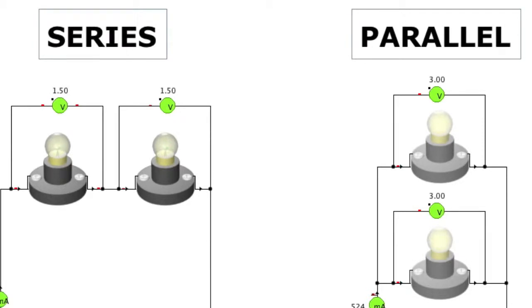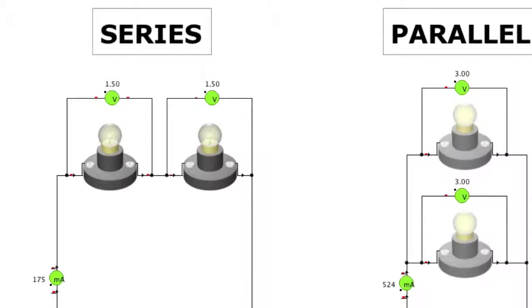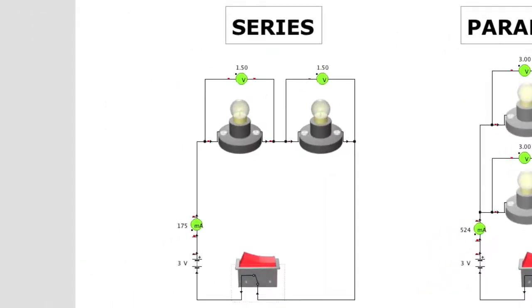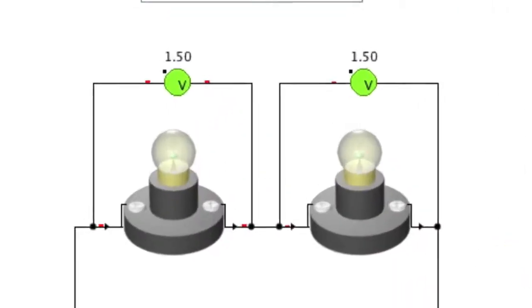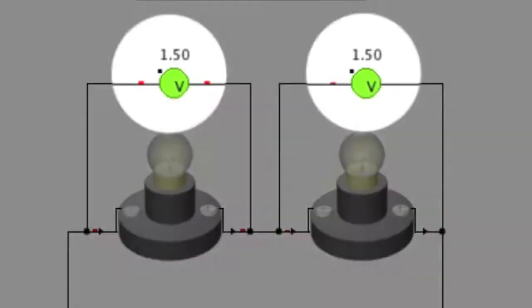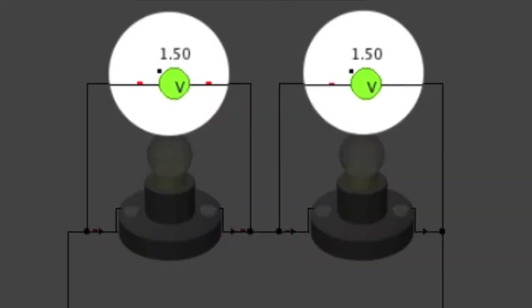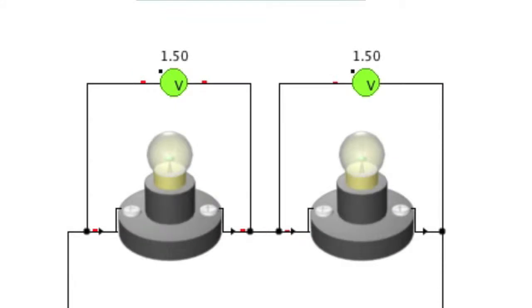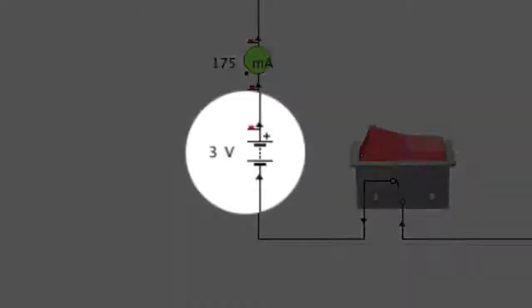To understand this let's take a closer look at the series circuit. In a series circuit all the items in a circuit share the electric energy from the battery. Therefore it's no surprise that the voltage drop across each bulb is 1.5 volts, exactly half of the voltage supplied by the battery.